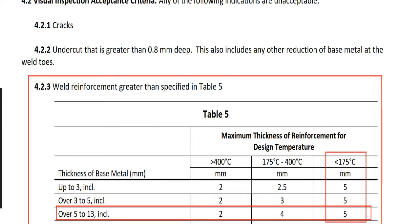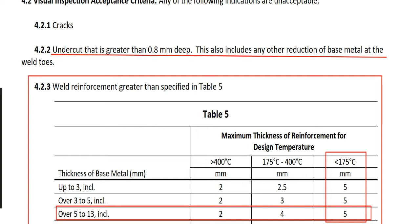4.2.2: Undercut. Undercut that is greater than 0.8 mm depth — this also includes any other reduction of base metal at the weld toes. So undercut deeper than 0.8 mm is rejected. In Chapter 2 and Chapter 3 there are more detailed criteria for undercut, but in Chapter 4 it is very simple: just 0.8 mm depth. In the actual CWI Part B examination, you need to measure undercut depth many times, so you need to know how to measure it.